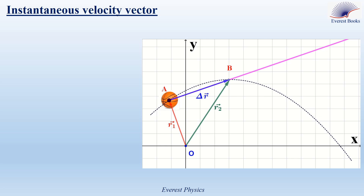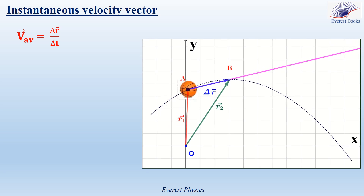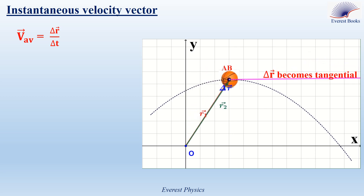Let's move to the instantaneous velocity vector. The instantaneous velocity vector is the velocity at a certain instant. To calculate the average velocity vector between two points, we divide the displacement vector by the time taken to get between these two points. A particle moves on a curved path from point A to point B. As the time interval delta T becomes shorter, the displacement vector also becomes shorter. When delta T becomes sufficiently small, the displacement vector becomes tangential to the trajectory. As delta T goes to zero, the average velocity vector becomes tangential to the trajectory. Therefore, the instantaneous velocity vector is the limit of the average velocity vector as delta T goes to zero.